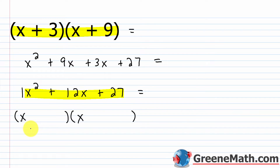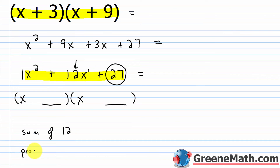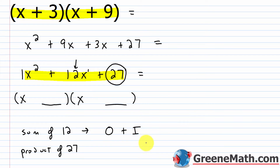Where you have to think is the remaining positions — you need two integers that are going to sum to the middle coefficient (the coefficient for x to the first power) and give a product equal to the final constant term. So you want a sum of 12 and a product of 27. The outer and inner steps gave 9x and 3x, which add to 12x, and the last step gave 3 times 9 equals 27. So 9 and 3 satisfy both conditions.